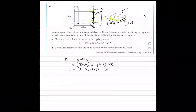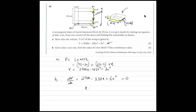The second part says, given that x can vary, find the value of x for which V has a stationary value. You are going to differentiate this. Differentiation of 2700x is going to be 2700, minus 165x squared is going to be negative 330x, plus 6x squared. You are going to set it equal to 0 and solve for the values of x. The values coming out are 45 and 10.